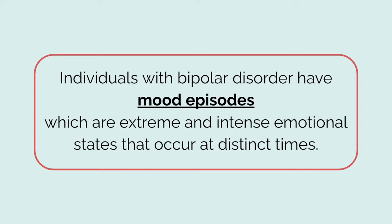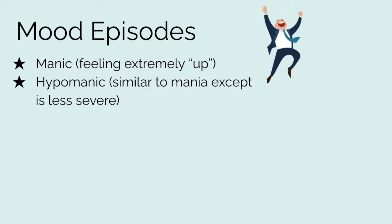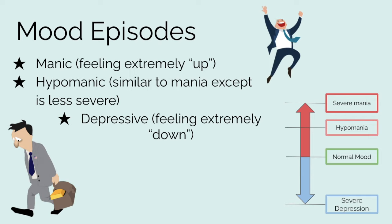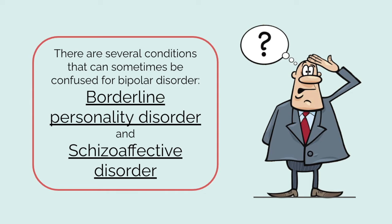These mood episodes are categorized as either manic, which is feeling extremely up; hypomanic, which is similar to mania except less severe; or depressive, which is feeling extremely down. You can think of the three mood episodes as being on a spectrum, with mania and depression being on opposite ends and normal mood in the middle. There are several conditions that can sometimes be confused for bipolar disorder, such as borderline personality disorder and schizoaffective disorder.